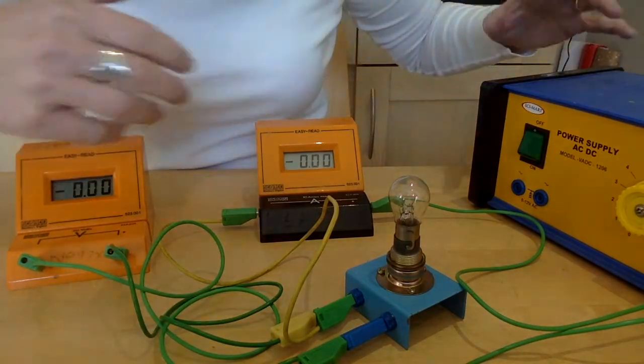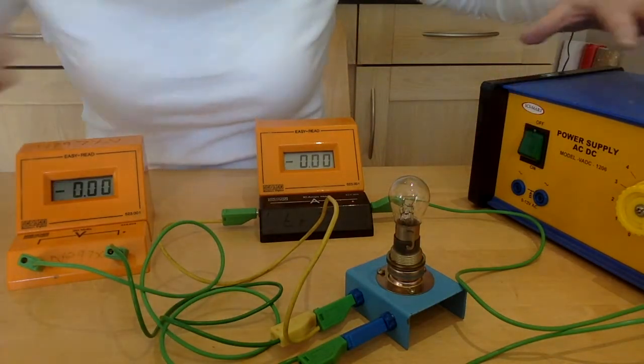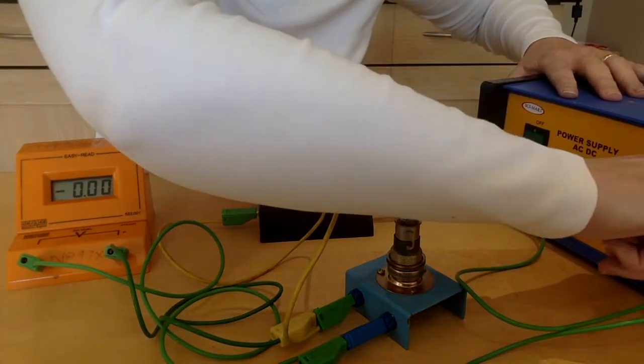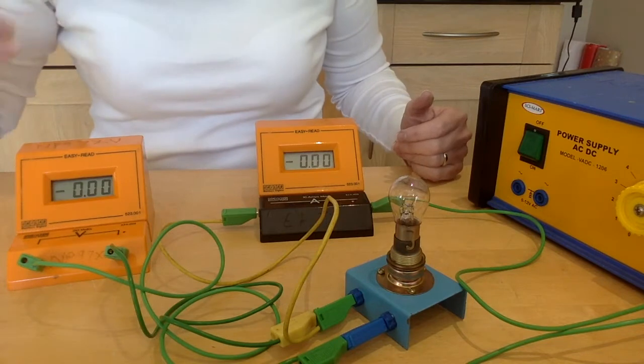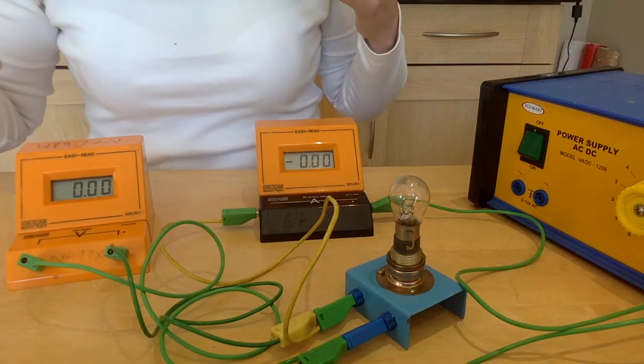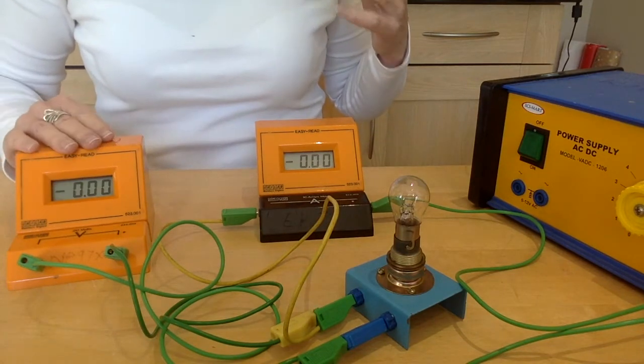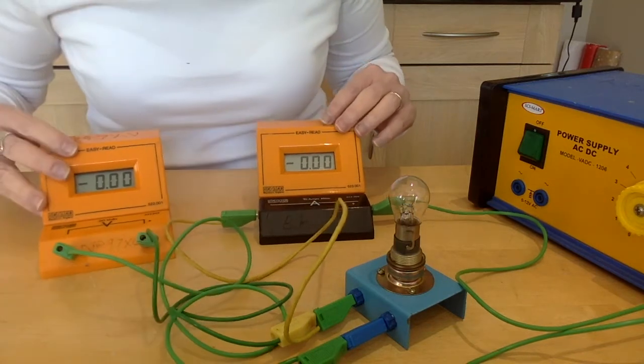Okay so we're going to take a series of measurements now. I'm going to adjust the variable resistor to give me six sets of readings for voltage and for current.